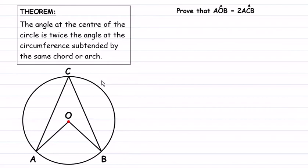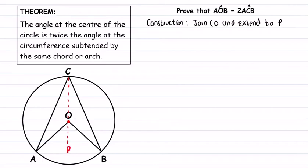The first thing we're going to do is construct something. We're going to join the line CO and extend it to a new point — let's call this point P. Make sure you write this down and show any constructions you have made. By doing this we have created two triangles: triangle OAC and triangle OBC. We have also split the angle at the center into two parts: O1 and O2. Likewise, we call the two parts of angle C as C1 and C2.